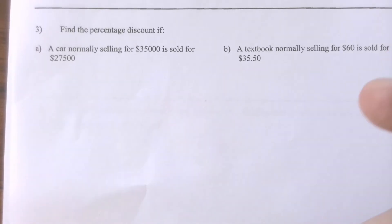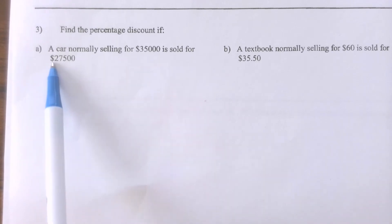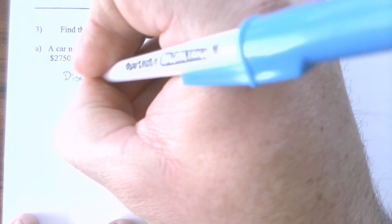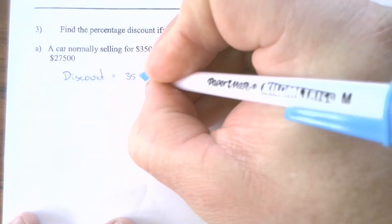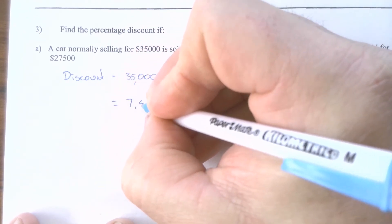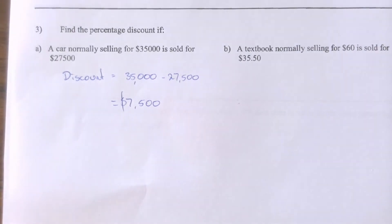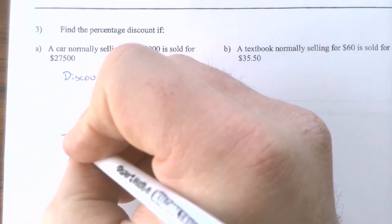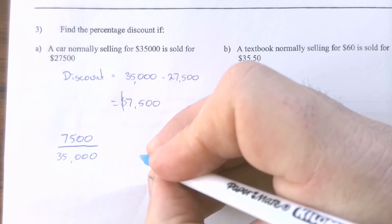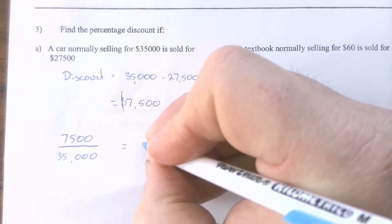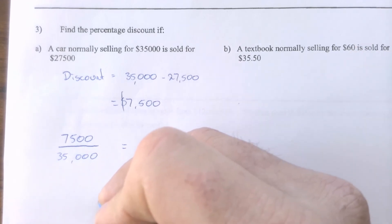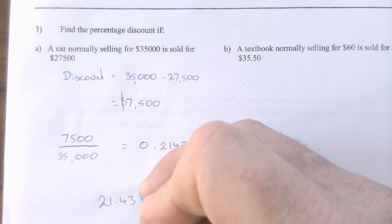Question 3a wants me to find the discount I got when purchasing a car. It's normally $35,000 and I managed to buy it for $27,500. I need to work out how much I actually saved, so my discount in dollars is $35,000 minus $27,500, which is a saving of $7,500. Then I take my saving of $7,500 and divide it by the original $35,000, pop that into my calculator to get 0.2143, and multiply by 100 to get a 21.43% discount.